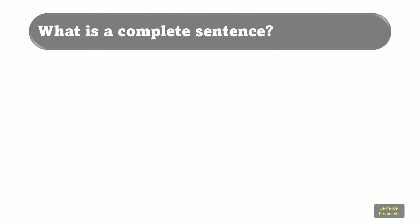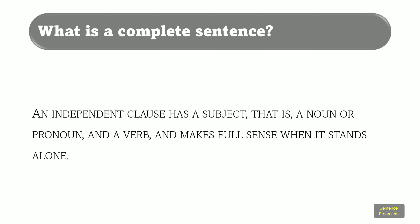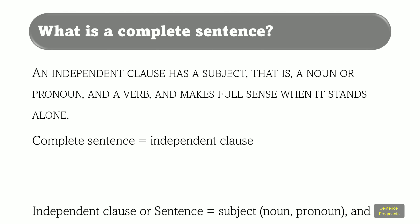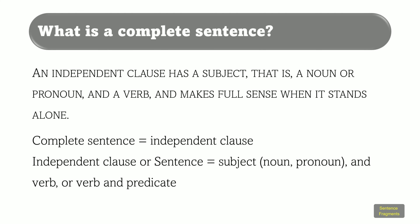So far, we have established that a complete sentence is an independent clause. An independent clause has a subject — that is, a noun or pronoun — and a verb, and makes full sense when it stands alone. Therefore, a complete sentence equals an independent clause, and an independent clause or sentence has a subject, which is a noun or pronoun, and a verb, and/or a verb and a predicate.